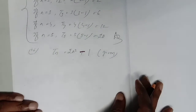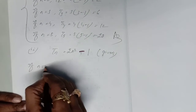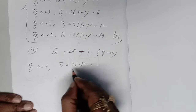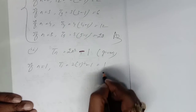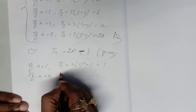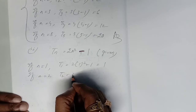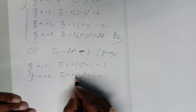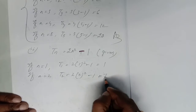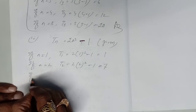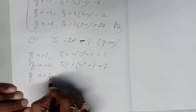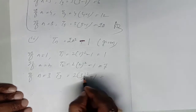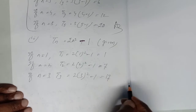How do you find the first 5 terms? Putting n equal to 1: T1 = 2(1)² − 1 = 2 − 1 = 1. If n equal to 2: T2 = 2(2)² − 1 = 2 × 4 − 1 = 8 − 1 = 7. Putting n equal to 3: T3 = 2(3)² − 1 = 2 × 9 − 1 = 18 − 1 = 17.